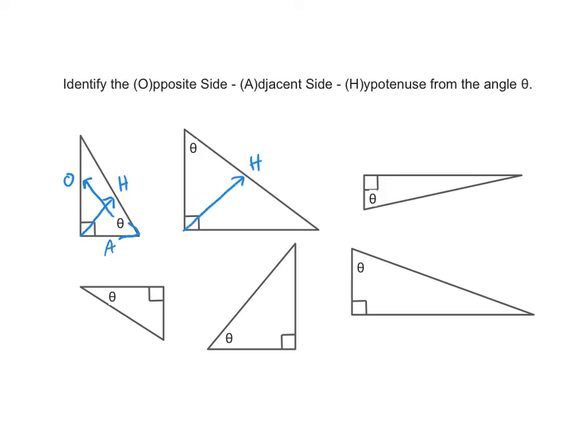So again, hypotenuse goes through the right angle. Adjacent makes the angle with the hypotenuse. Opposite is away. Hypotenuse. And then the side that makes the angle with the hypotenuse is the adjacent. The side away from is the opposite.